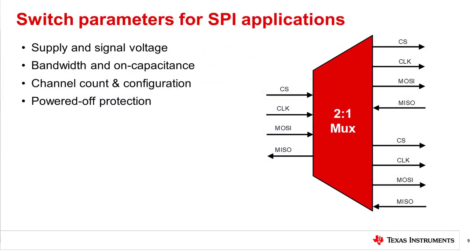Because the SPI bus has no formal or standardized specification, it is important to align your switch parameters with those of the SPI devices in your system. Key parameters to align are voltage, bandwidth, taking into consideration additional factors such as on-capacitance, channel count, and features such as powered off protection.